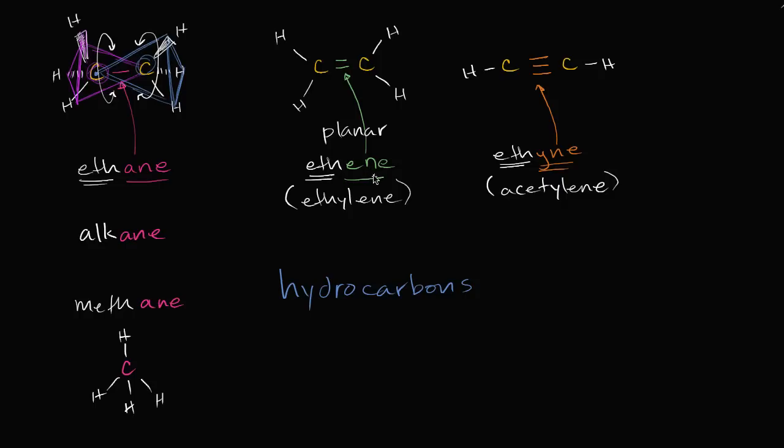Ethene, which is often known as ethylene, has many industrial uses, but maybe most interestingly, it can be used as a plant hormone that can be used to ripen fruit. Ethyne, most commonly known as acetylene, can be used because it burns very hot—it can be used to fuel blowtorches.